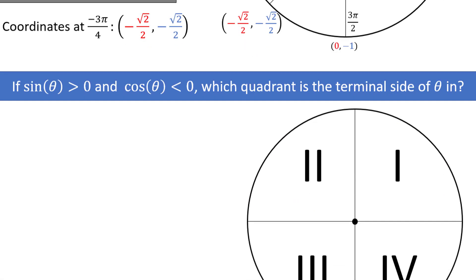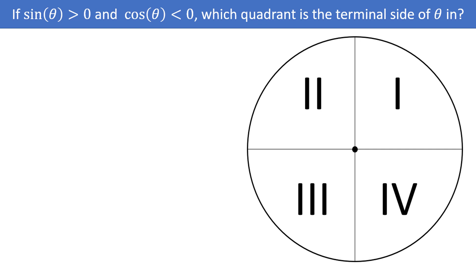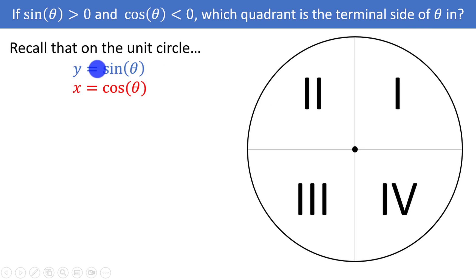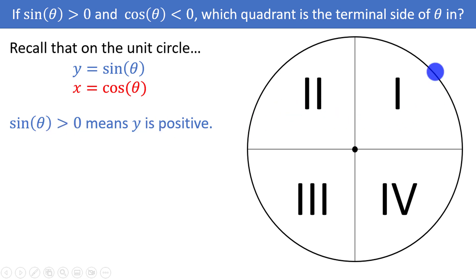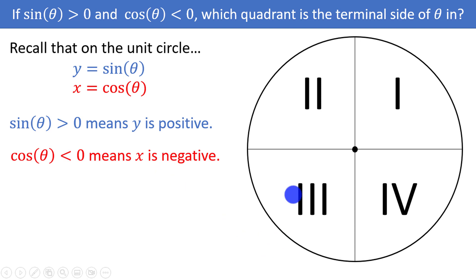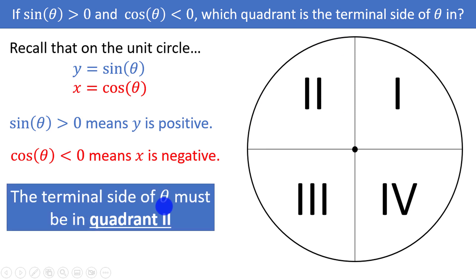It turns out that if you know the sign — either positive or negative — of two trig functions that are not reciprocals of each other, you can always determine which quadrant of the unit circle you are in. Say sine of theta is greater than zero and cosine of theta is less than zero — which quadrant is the terminal side of theta in? On the unit circle, the y-coordinate is sine and the x-coordinate is cosine. Sine positive means y is positive, so we are in quadrant 1 or 2. Cosine negative means x is negative, so we are in quadrant 2 or 3. The quadrant common to both is quadrant 2, so the terminal side of theta must be in quadrant 2.